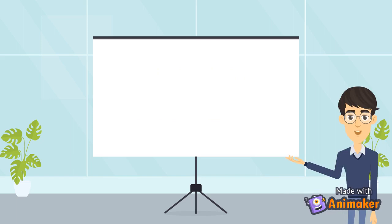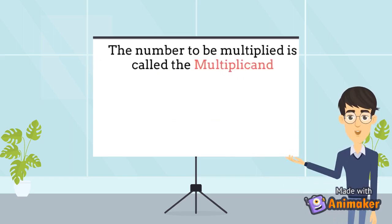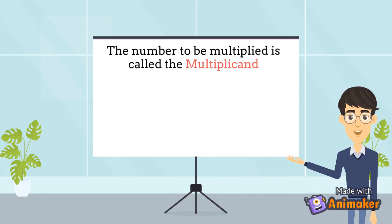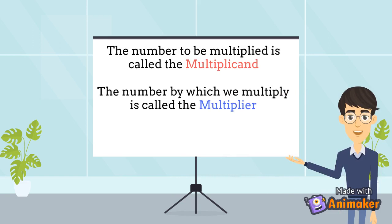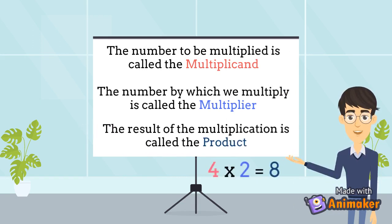In a multiplication sum, the number to be multiplied is called the multiplicand. The number by which we multiply is called the multiplier. And the result of the multiplication is called the product.